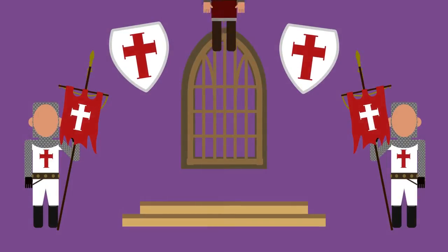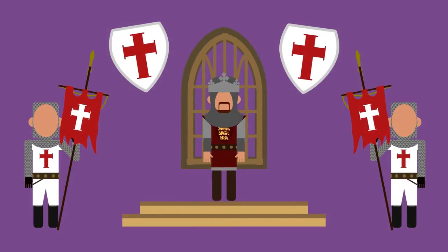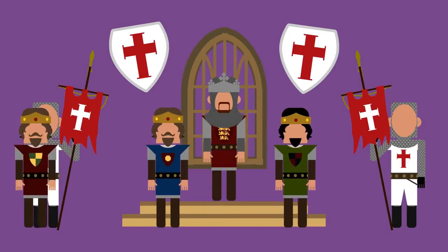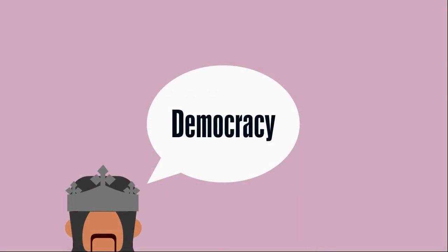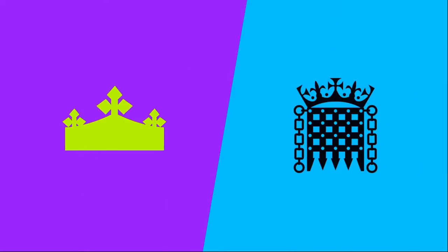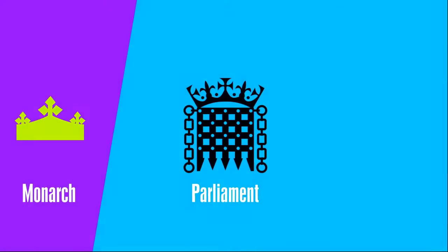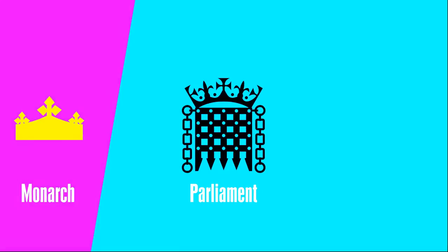Fifty years later, Simon de Montfort, for the first time, invited representatives of the towns and shires to his 1265 Parliament. These events established the foundations for the representative democracy we have today. And from this point onwards, the power to make decisions for the nation passed, over time, from the monarch to Parliament.